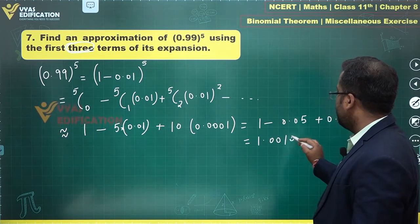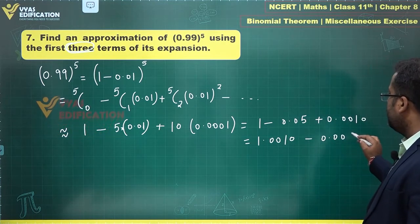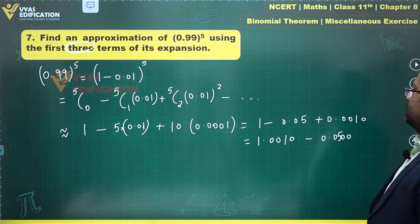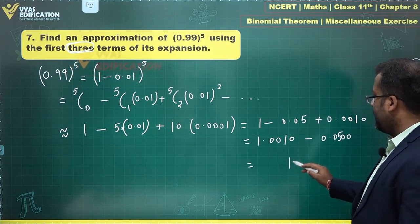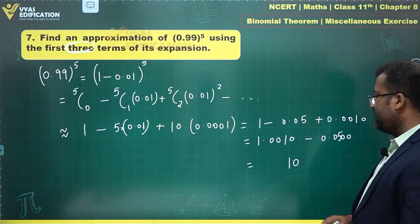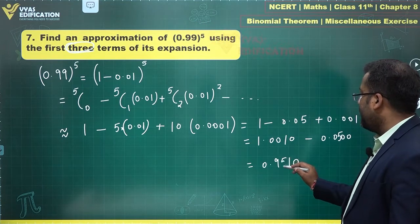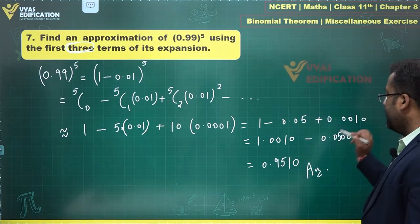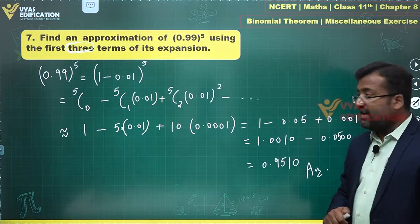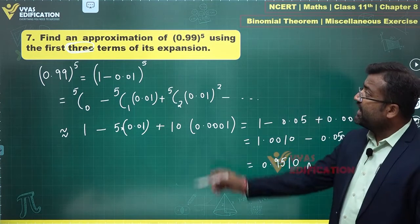1.0010 minus 0.0500 is what I'll get. So at the end you have 10 and 100 minus 5 will be 95. So 0.9510 is what I'm getting over here. That's the required answer.